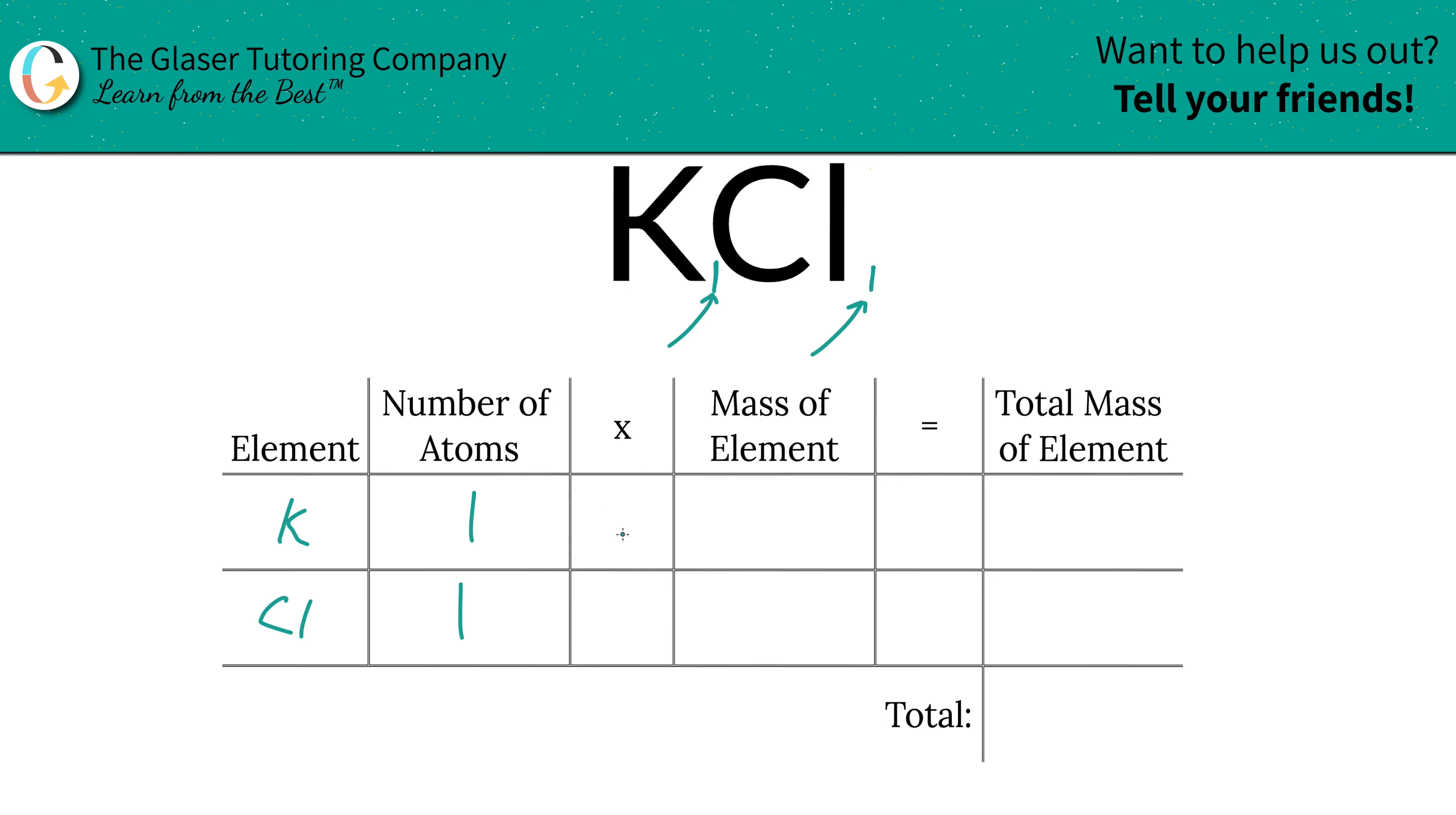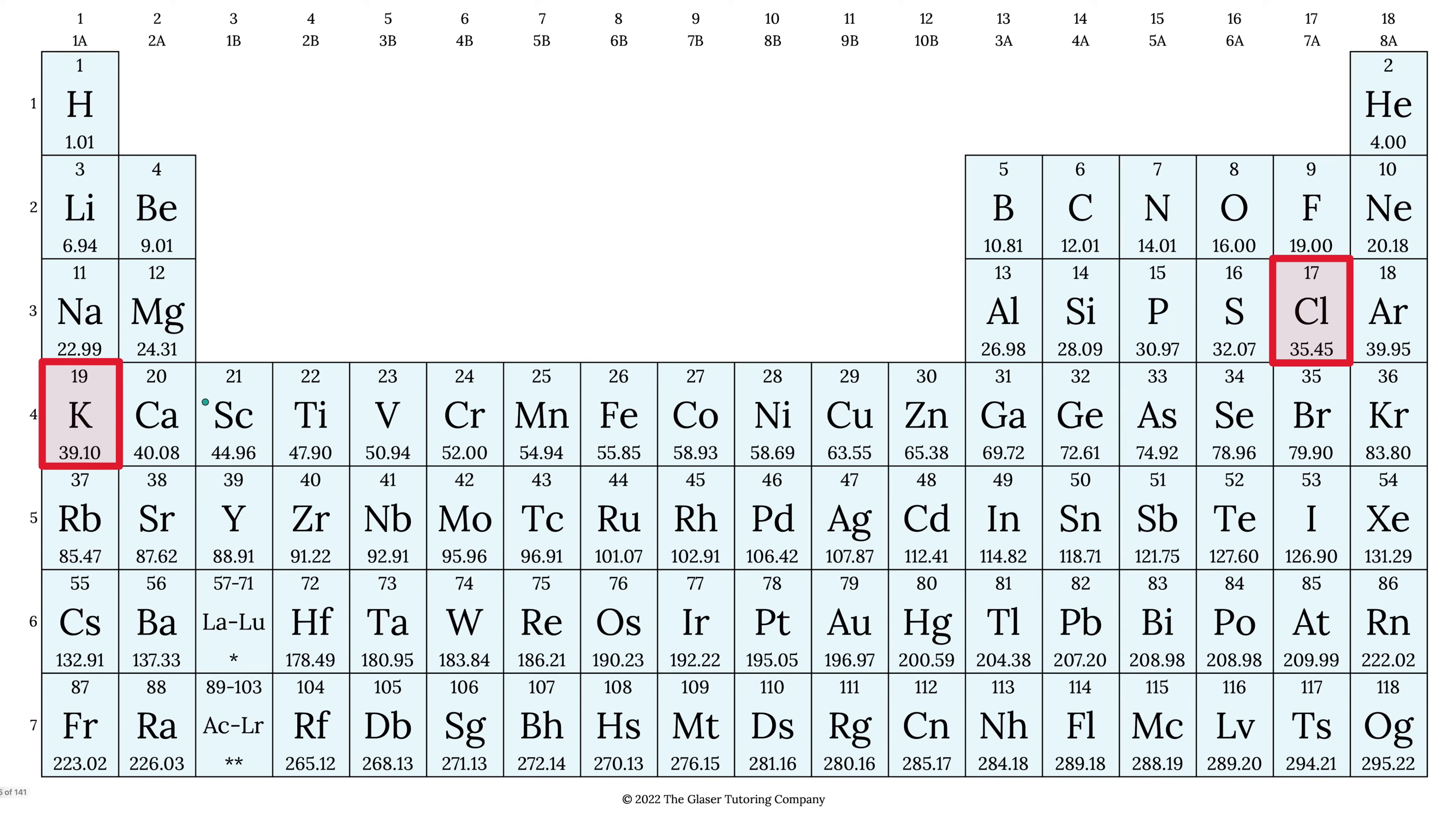So there's one potassium and also one chlorine. Then we're going to multiply those numbers by the mass of each particular element, and those masses are found on the table. So let's take a look.